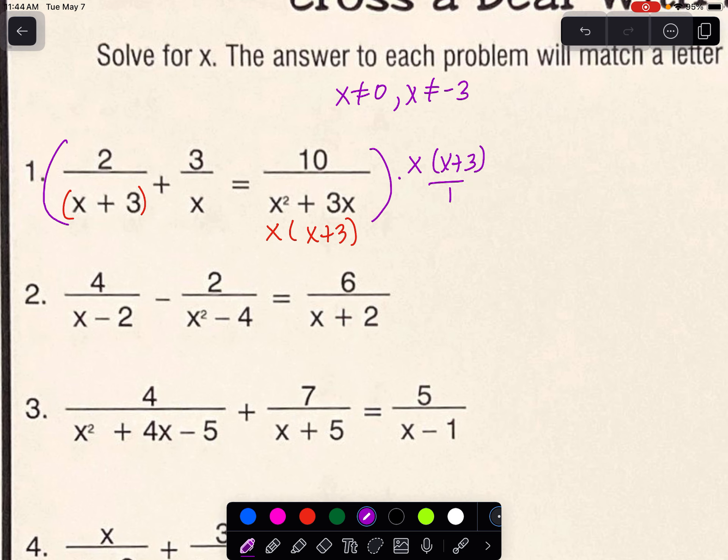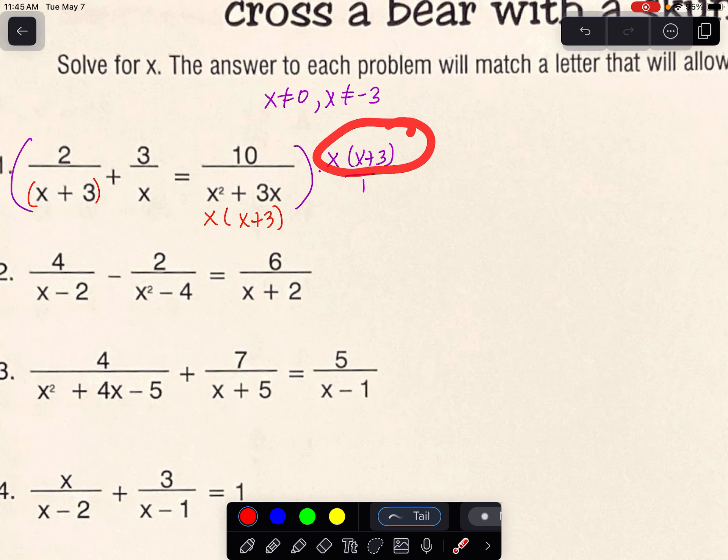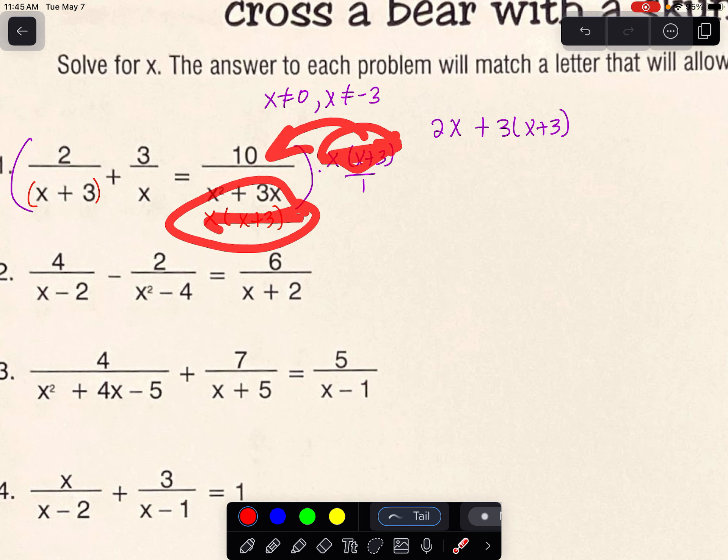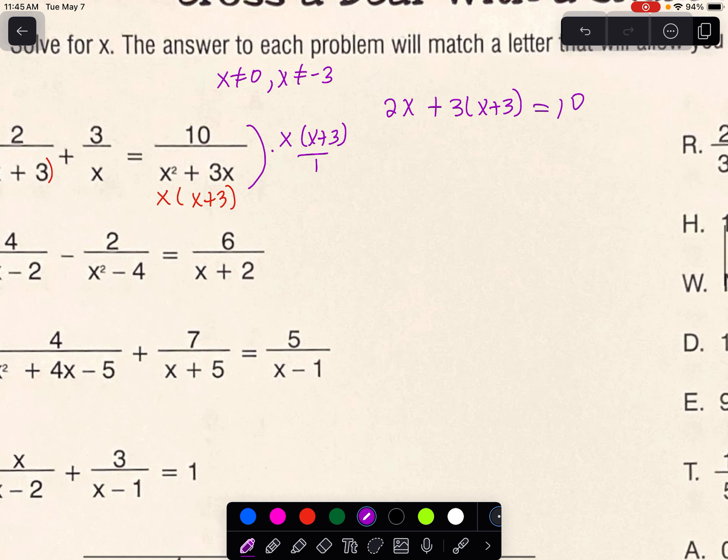We're going to multiply everything through by those factors of x and x plus 3. Those just get multiplied on the tops only, because we are going to be left with something nicer. If I multiply this by the top here, the x plus 3s cancel. I'm left with a 2x. If I multiply this by this fraction, the x's cancel. I'm left with 3 times the quantity of x plus 3. And then finally, if I multiply this by this fraction, both of those cancel. So I'm only left with a 10 divided by 1, or a 10.